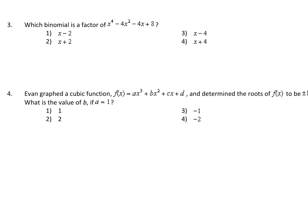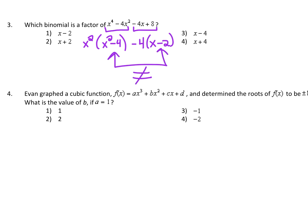Number 3: which binomial is a factor of that expression? Let's try to factor it. Since there are four terms, we're going to jump into grouping. Out of the first two terms, we could pull out an x squared, which leaves us with x squared minus 4. And out of the next two terms, we could pull out a negative 4, and that leaves us with x minus 2. But these two groups have to match, and they don't — so we cannot factor this using the grouping method. We need another plan.